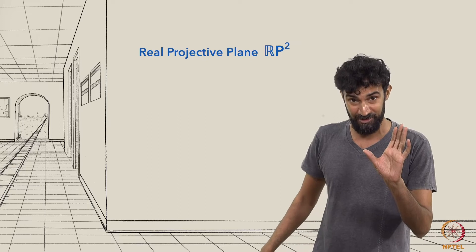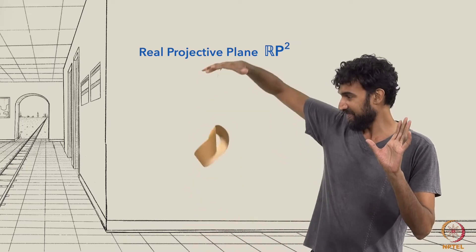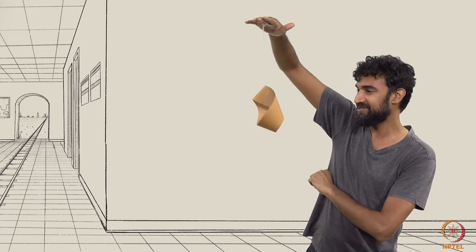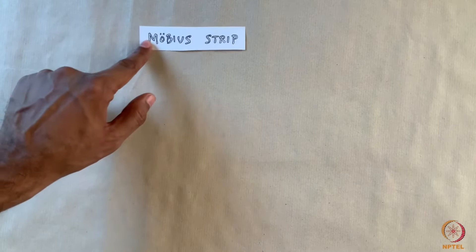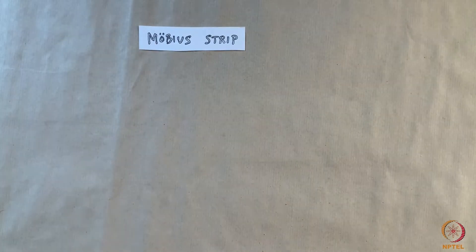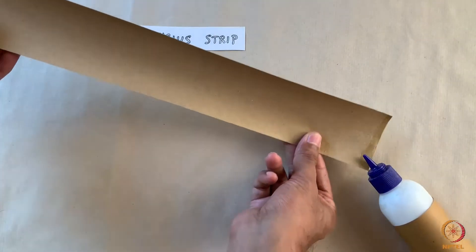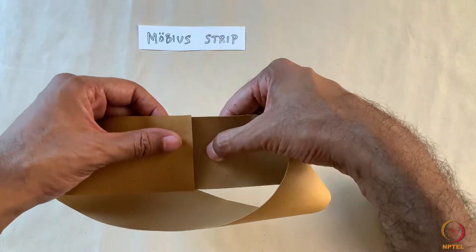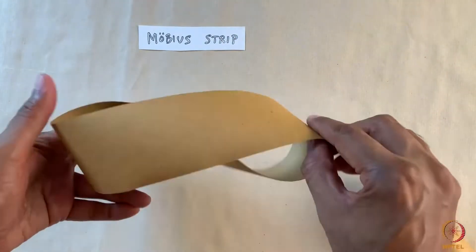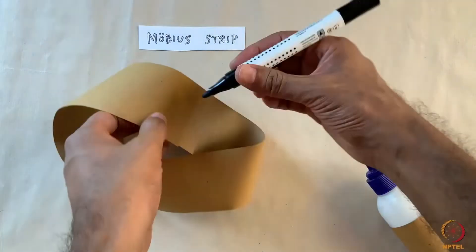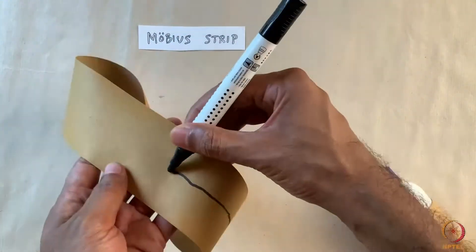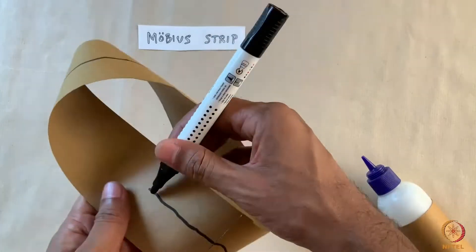However, pieces of the real projective plane can be visualized. One way is to construct a Möbius strip. It's just a strip of paper with a half-twist, whose ends are glued together. The special thing about it is it has just one side, thanks to the half-twist.